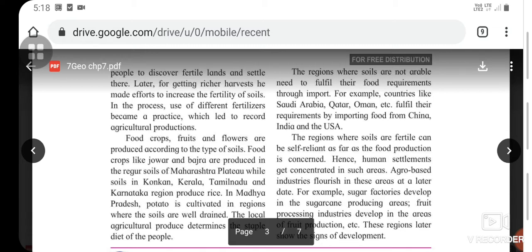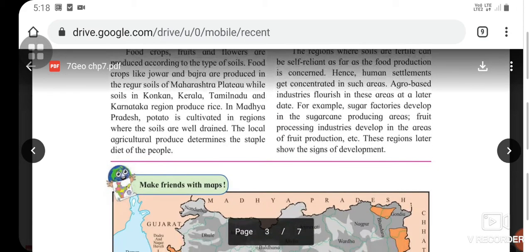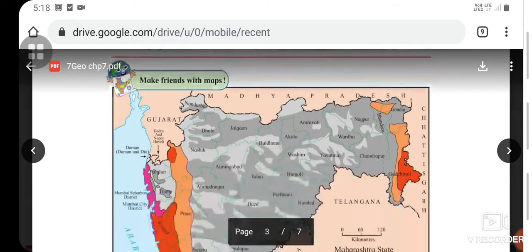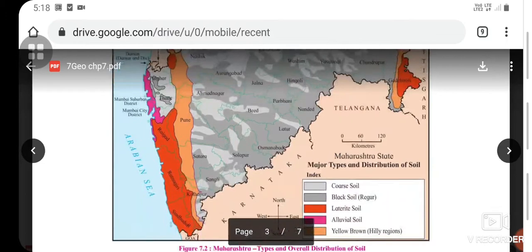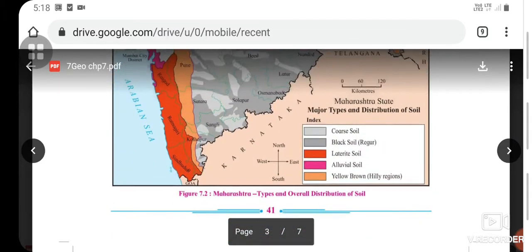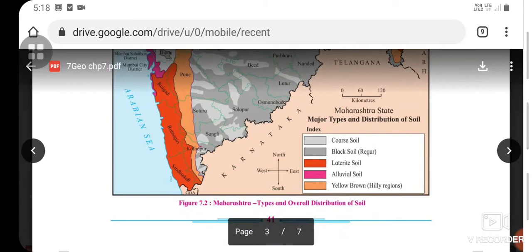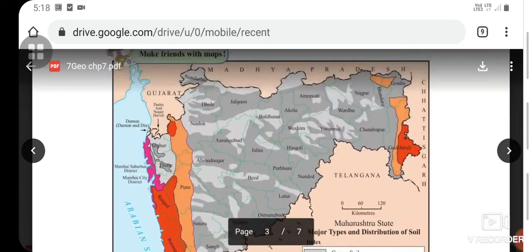Regions where soils are fertile can be self-reliant as far as food production is concerned. Hence human settlements get concentrated in such areas. Agro-based industries flourish in these areas at a later date. For example, sugar factories develop in sugarcane-producing areas, and fruit processing industries develop in areas of fruit production. These regions later show signs of development.